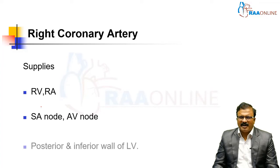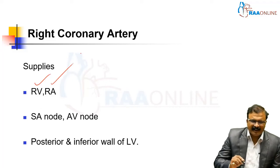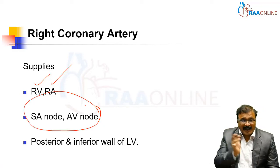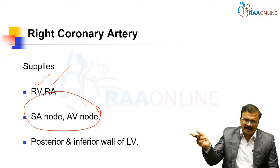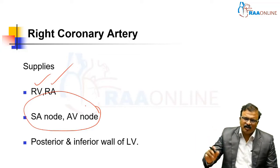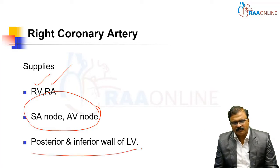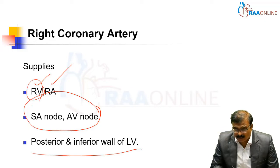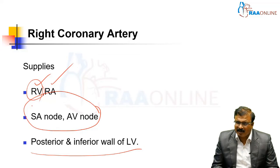In contrast to the left coronary system, the right coronary supplies the RV, RA, SA node, and AV node — this is very important. That is why you get bradycardia and heart blocks with right coronary system occlusion. In contrast, sympathetic activity and ventricular arrhythmias occur with left coronary involvement. The right coronary also supplies the posterior and inferior wall of the LV. If there is a major right coronary occlusion it can lead to RV infarction, which has specific management we will discuss.